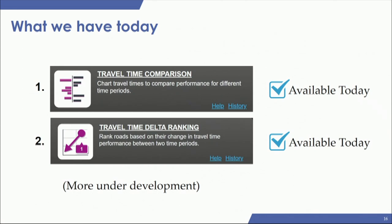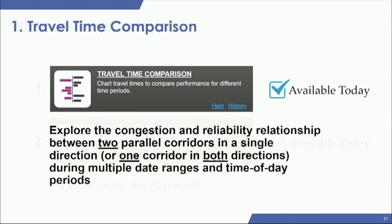There are two tools: the travel time comparison and the travel time delta ranking tool. We also have some enhancements currently under development. The travel time comparison is similar to the visualizations we just saw — the idea is to explore congestion reliability across two parallel corridors or one corridor in both directions, using multiple date ranges and time of day periods.